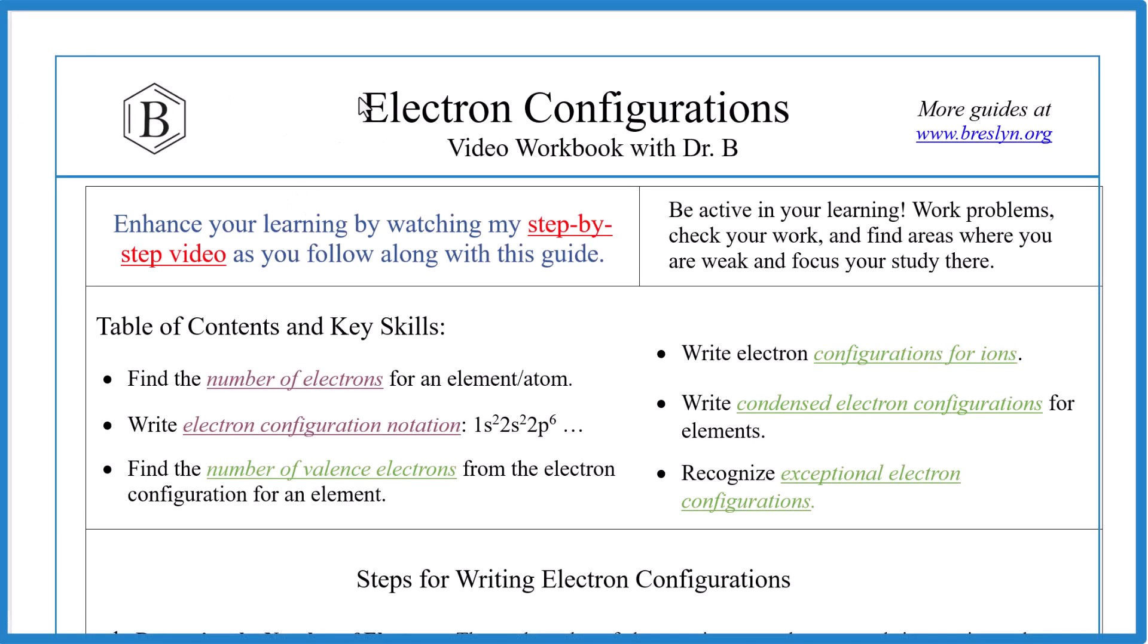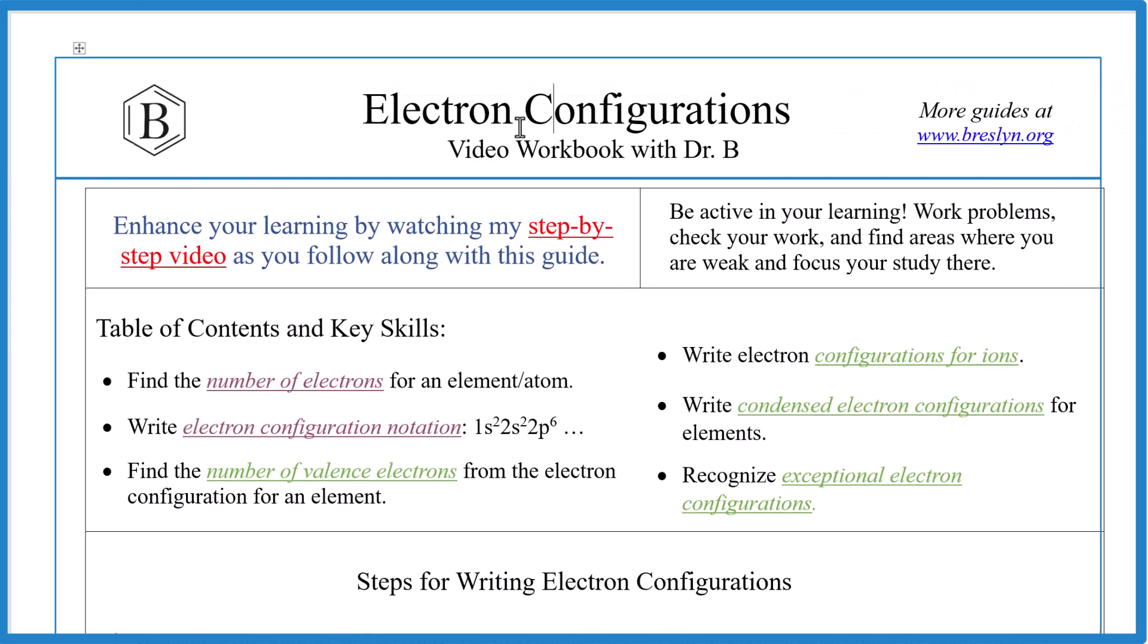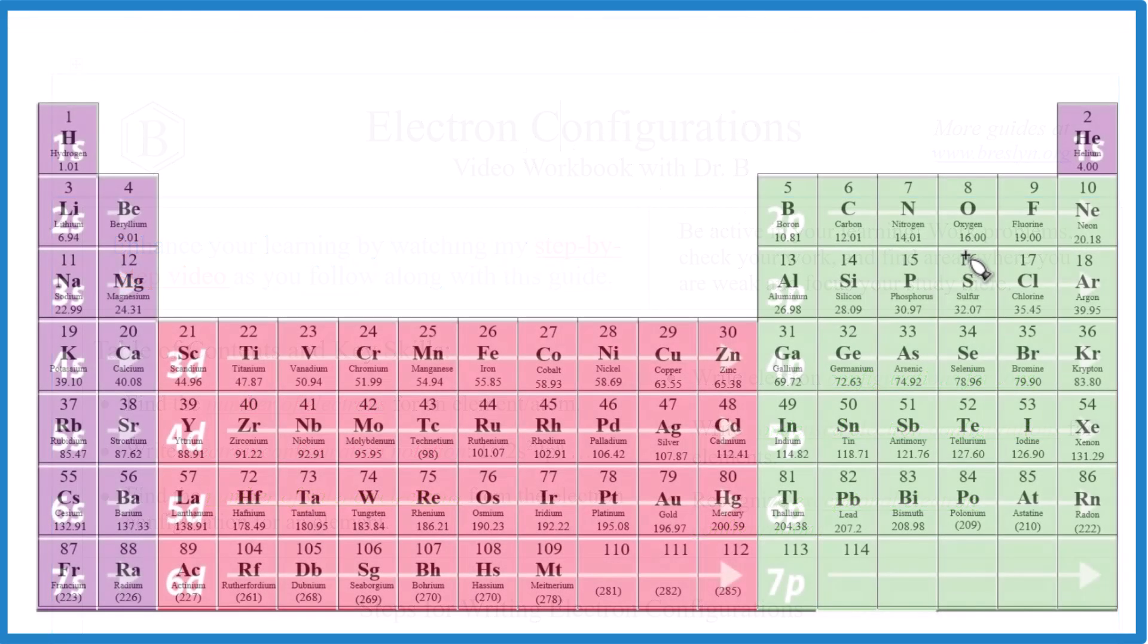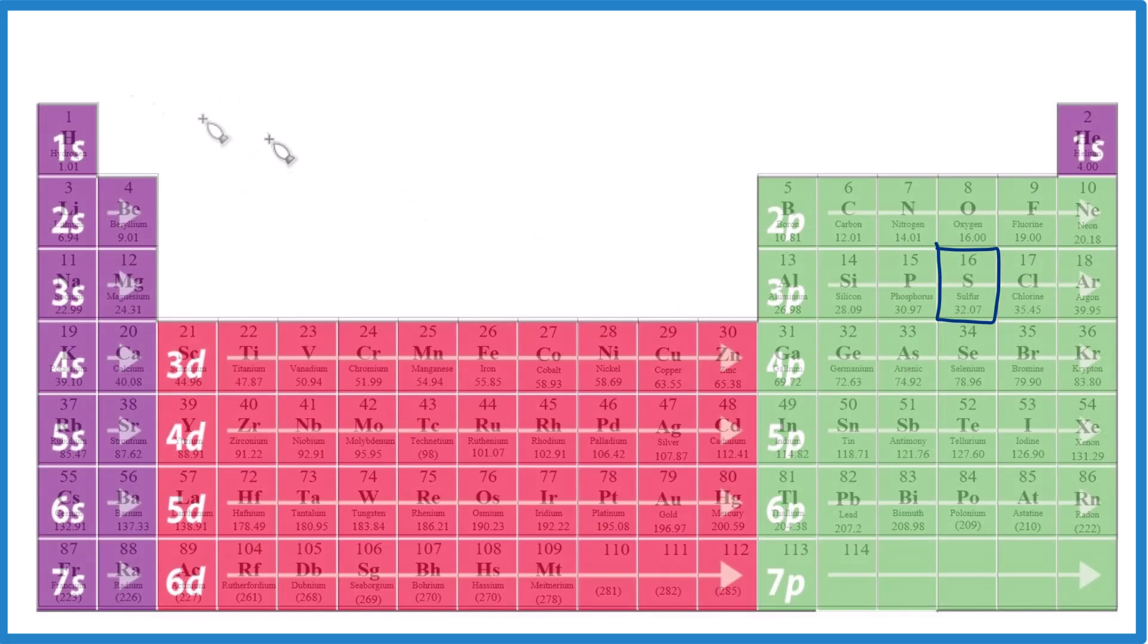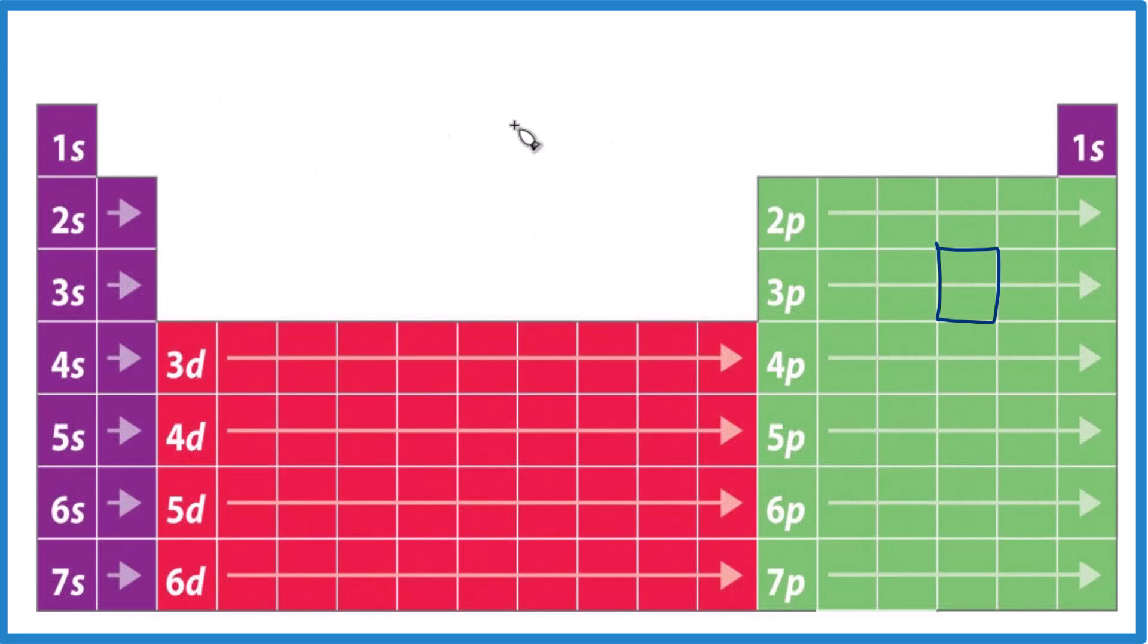This is Dr. B, and before we jump into this video workbook for electron configurations, I want to show you something kind of magical. Watch how I do this. We're going to write the electron configuration for sulfur right here on the periodic table. We go to the first energy level here, 1s1, 1s2.